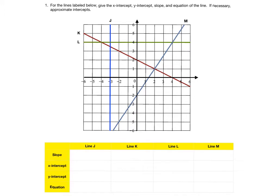So our objective here is to, for these four lines L, K, J, and M, we want to find their slope, their x-intercept, their y-intercept, and the equation of the line. Well, let's go through and do the simplest part first. That is just the x-intercepts and the y-intercepts. First, let's just go through and do the x-intercepts.